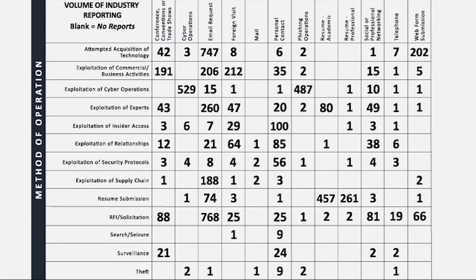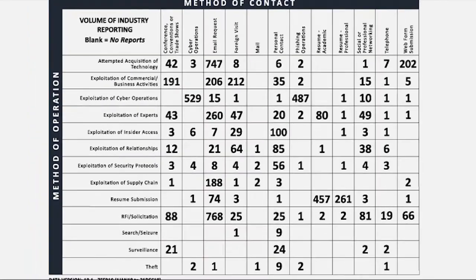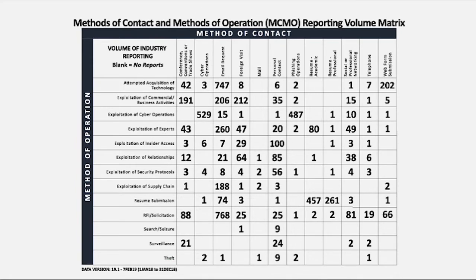The numbers occupying the intersections between the methods of contact and methods of operation represent SCRs received from cleared industry concerning that method of contact and method of operation during the time frame indicated by the data version. In fiscal year 18, DSS received roughly 8,700 SCRs derived from approximately 49,000 reports from cleared industry. These SCRs fuel the matrix and receive a regional look to assess metadata such as the method of contact, method of operation, and Industrial-Based Technology List, or IBTL.